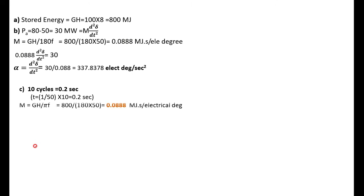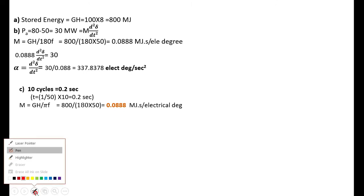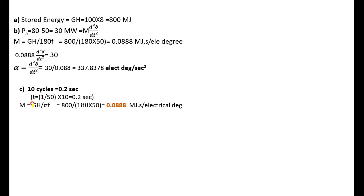We have the equation M = GH/π. Here I am expressing M in terms of radians instead of degrees. So M = GH/π, which is 800 divided by 180 times 50, giving M equal to 0.0888. This was already calculated. And d²δ/dt² is also already calculated.